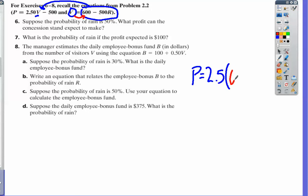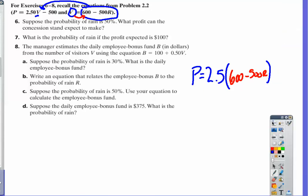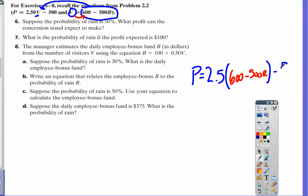The visitors is going to be that expression, 600 - 500R. Then we have our operating expenses of $500.